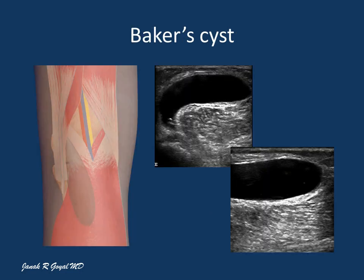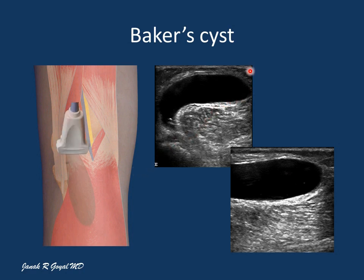Here is a patient complaining of pain and swelling on the posterior aspect of the knee. Sonographic examination of the posteromedial aspect showed marked enlargement of the semimembranosus-gastrocnemius bursa, consistent with a Baker's cyst.